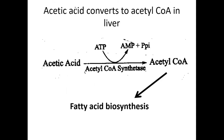Acetic acid converts to acetyl coenzyme A in the liver. Acetyl CoA is a precursor of fatty acids, so this acetyl CoA converts to fatty acids. The enzyme involved is acetyl CoA synthetase, which is present in the hepatocytes of ruminants. This reaction requires hydrolysis of one ATP into AMP and pyrophosphate. Enzymes that synthesize a compound using ATP are called synthetases.